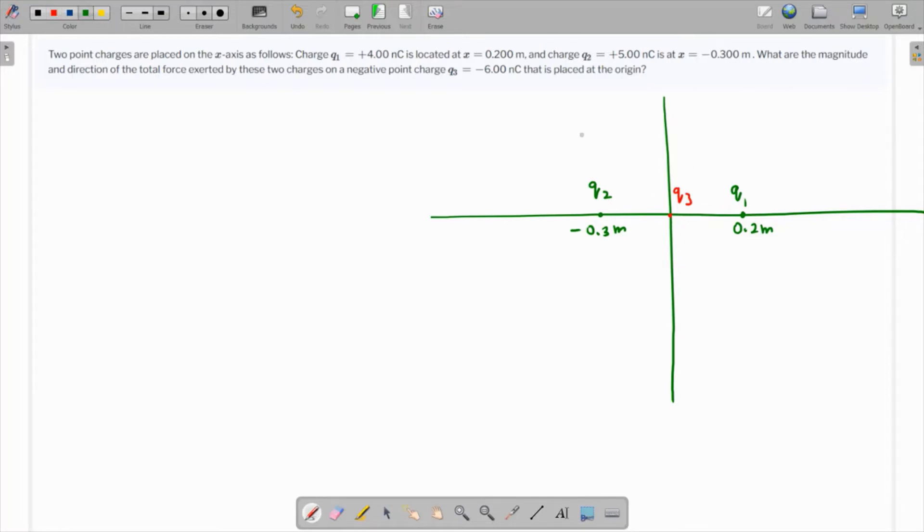This is a negative charge. Q1 is a positive charge, q2 is a positive charge, and q3 is a negative charge. This is going to be an attractive force over here and attractive force over here. Whichever is higher, that's going to win and the direction will be to that side.